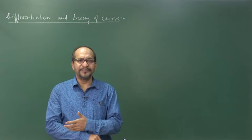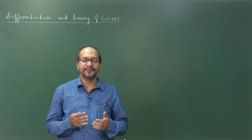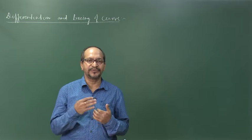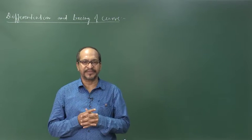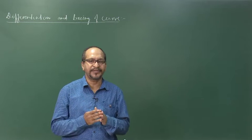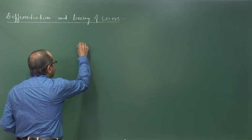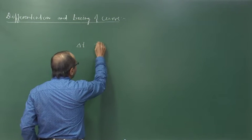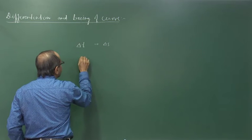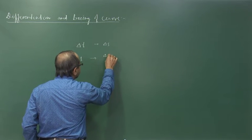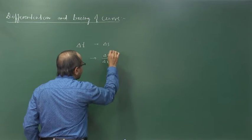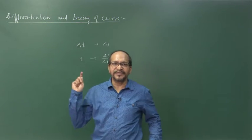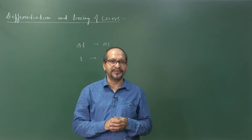When we say velocity, we know it is the rate of change of displacement. For example, a vehicle is moving and we want to find the velocity from 2 seconds to 3 seconds. We take the time interval as one second — represented by the symbol delta. So in this time delta t, we find the change in displacement delta s, and delta s by delta t gives us the average velocity.